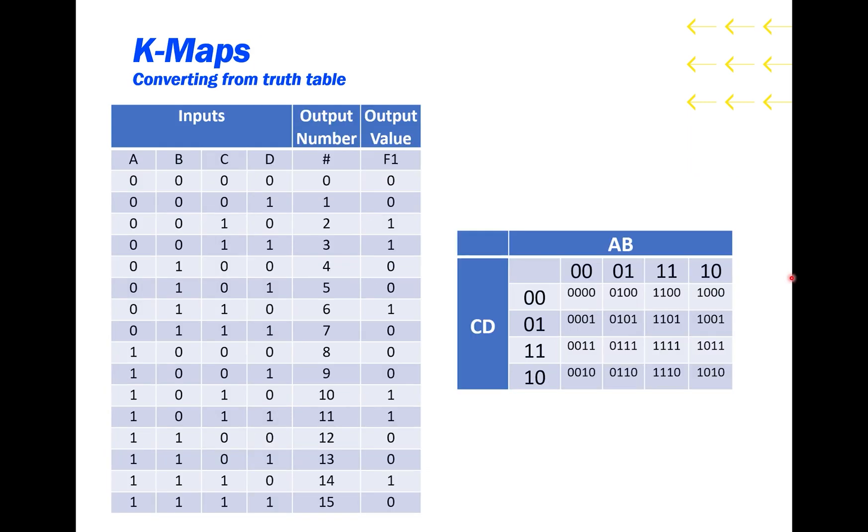How do we get a K-map out of a truth table? Well, just like the truth table, the K-map has to represent all of the different possible inputs. On the top, we have all the different combinations of A and B, and vertically we have all the combinations of C and D. So, combining them in a matrix gives us all the combinations of both.